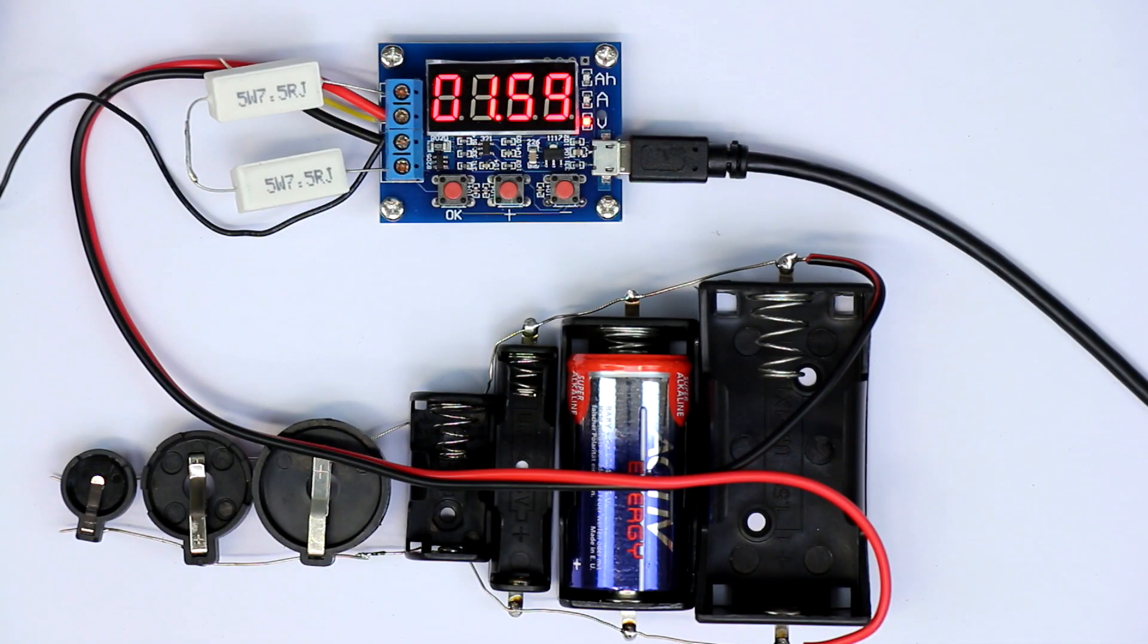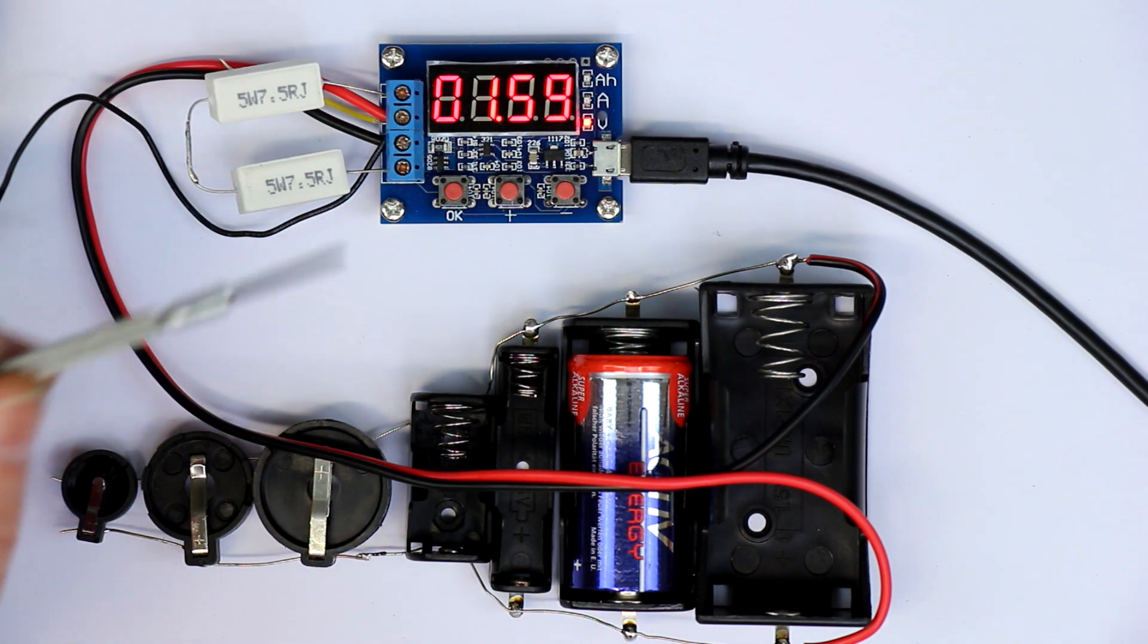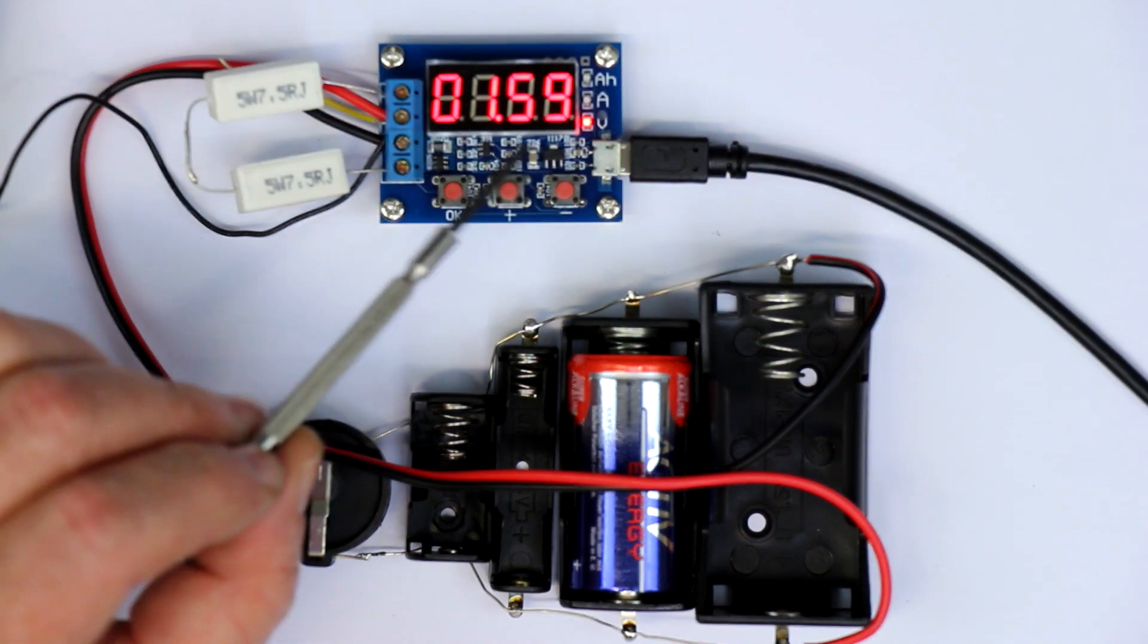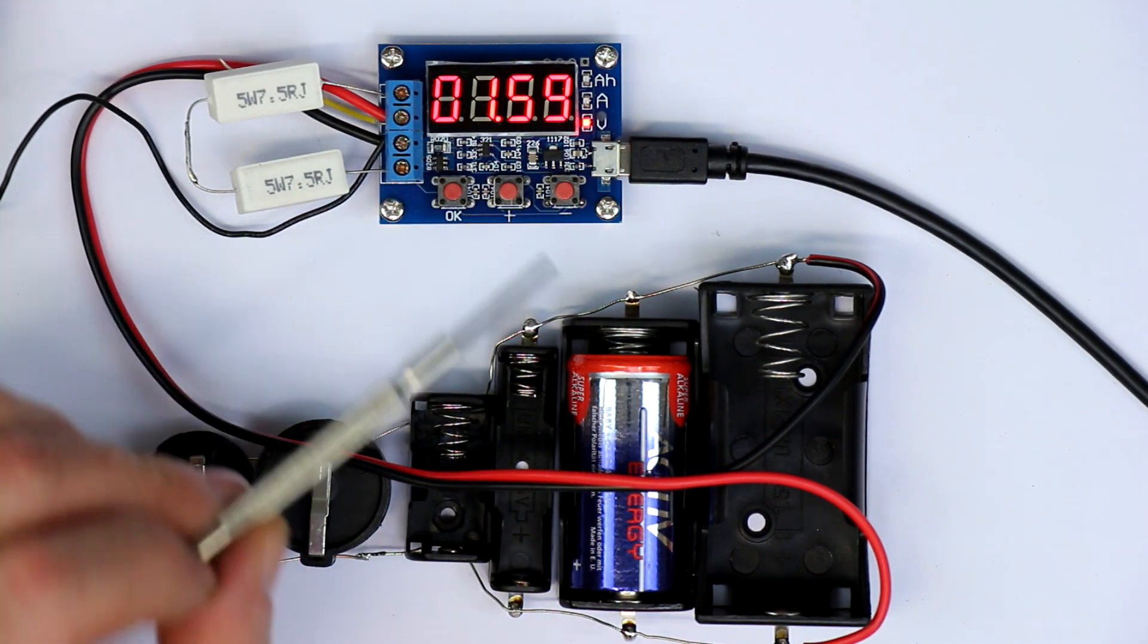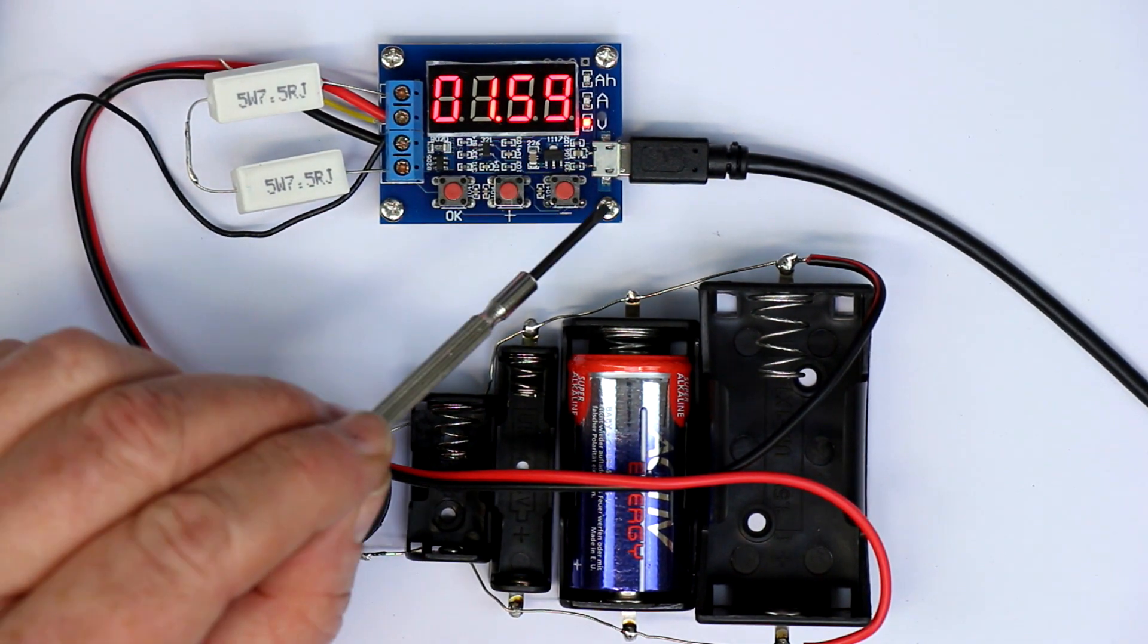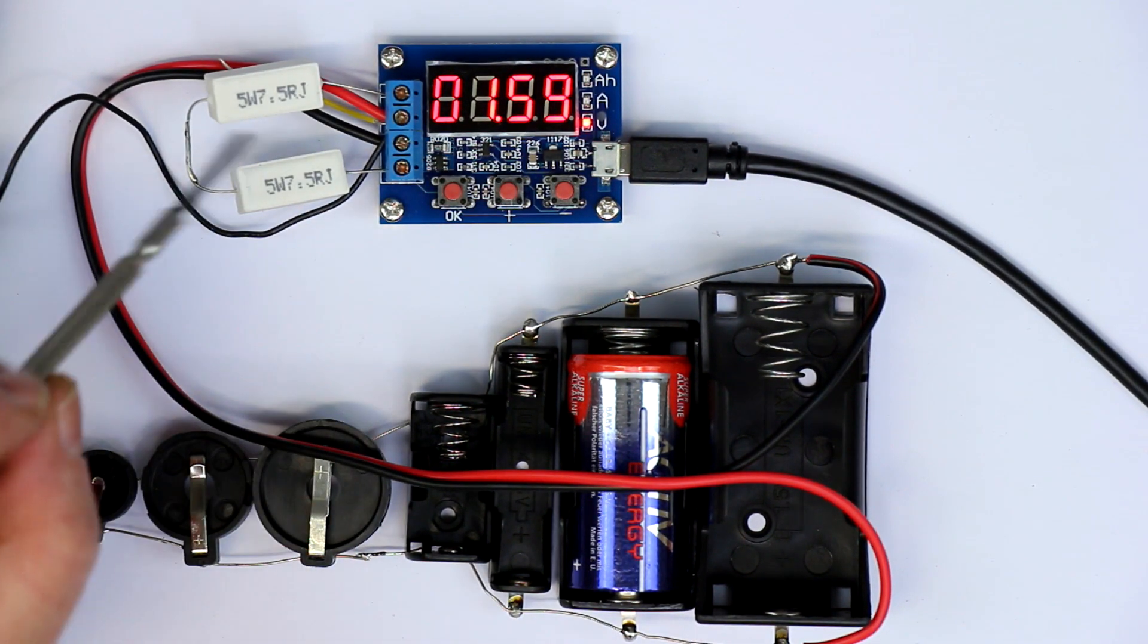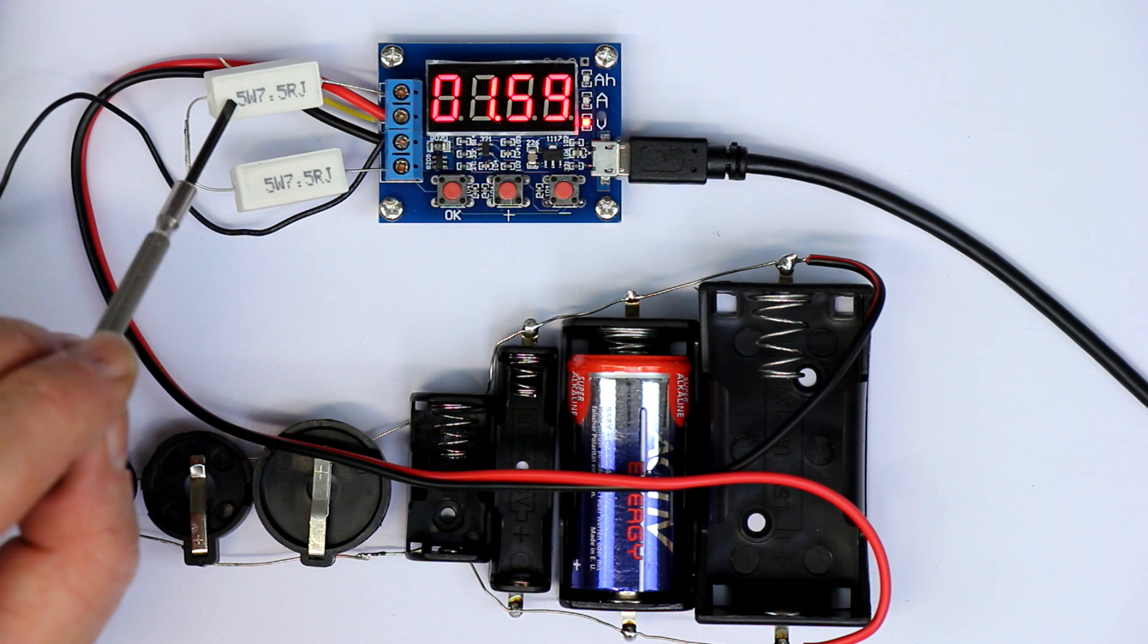To find out the remaining charge of any primary or rechargeable battery, I wanted this little thing here, and I will explain what you get and what it does. You get basically this blue module plus two power resistors, each 7.5 ohms, 5 watt.